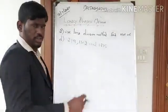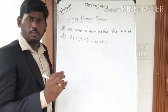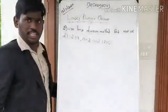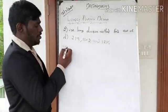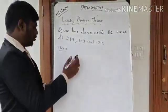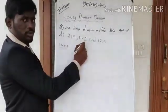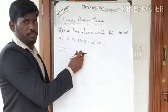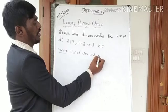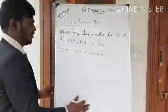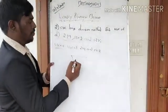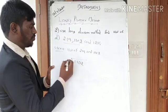Next question: find HCF of 219, 1102, and 1218. Before I taught you how to find HCF for two numbers, but now I am going to teach using three numbers. Step 1: choose any two numbers. I choose 219 and 1102. First find the HCF of those two numbers. Write the bigger number 1102 as the dividend and 219 as the divisor.